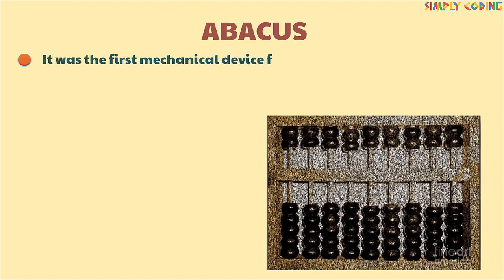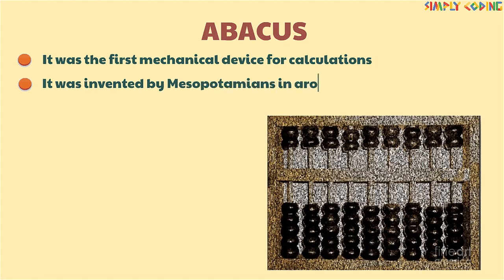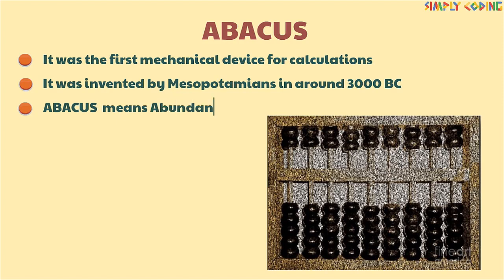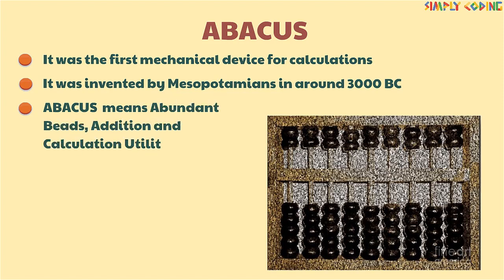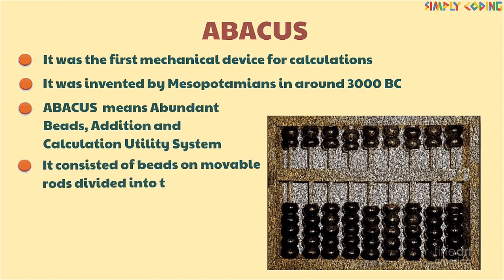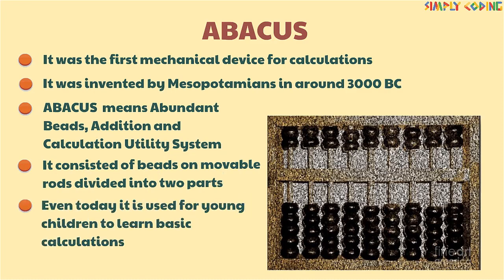Abacus was the first mechanical device for calculations. It was invented by Mesopotamians around 3000 BC. Abacus stands for abandoned beads, addition, and calculation utility system. It consisted of beads on movable rods divided into two parts. Even today, it is used for young children to learn basic calculations.